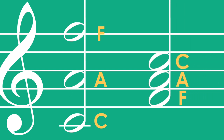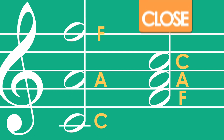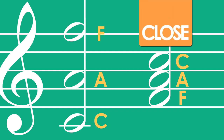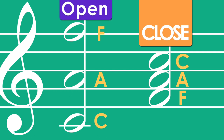Both of these chords use the same notes — F, A, and C — an F major chord. One is a closed chord because all of the notes fit within one octave, and the other is an open chord because all of the notes do not fit within one octave.